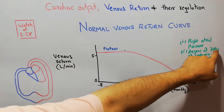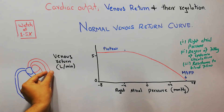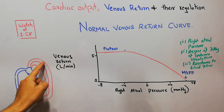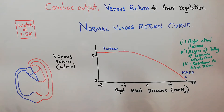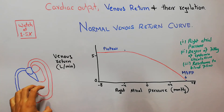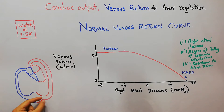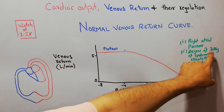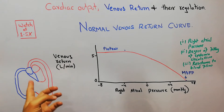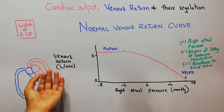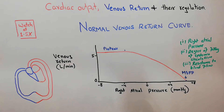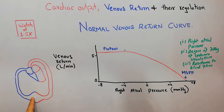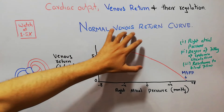The second determinant is the degree of filling of the systemic circulation. Blood is pumped by the heart into the aorta and goes into all systems of the body. The amount of blood present in this circulation and the tone and pressure within it determine the degree of filling, which helps push blood pressure towards the heart. Finally, the third determinant is resistance to blood flow offered by blood vessels at different levels.